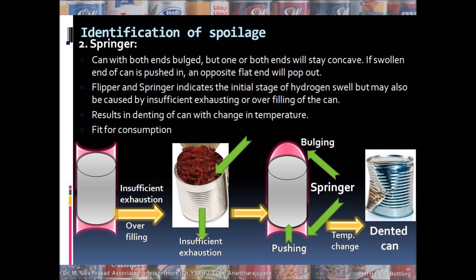The springer is similar to the flipper in terms of the reasons for its formation. Both flipper and springer are caused as a result of overfilling — filling the can over and above its capacity — and under-exhaustion, which means exhausting the can below the required temperature and duration. Both flipper and springer are fit for consumption, but when exposed to fluctuations in temperature, it may lead to denting of the can.